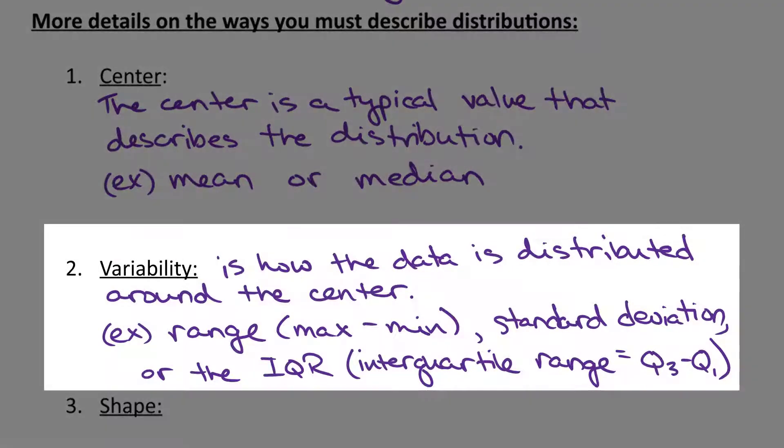For variability, this is how the data is distributed around the center. The most common that you've probably used before is the range, the max minus the min. And in Algebra 2, you probably learned about the standard deviation, but we'll review that.